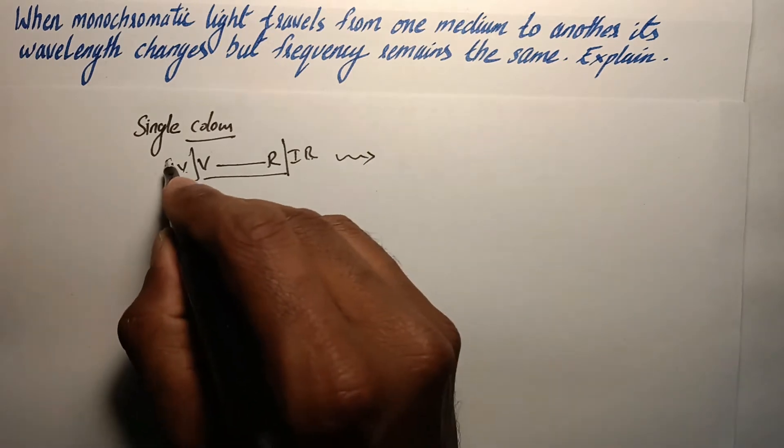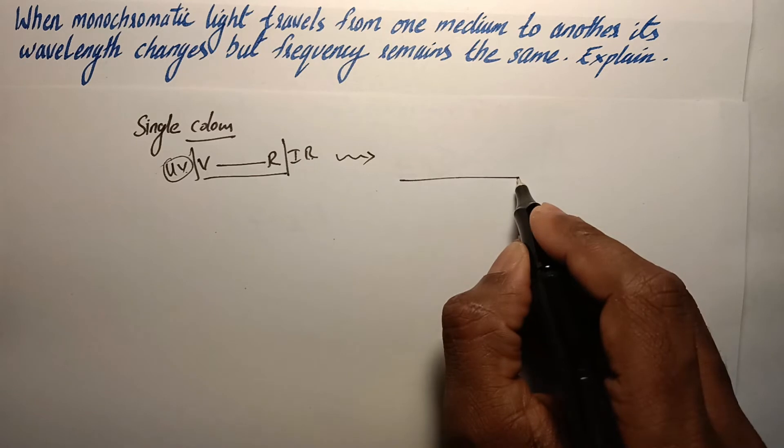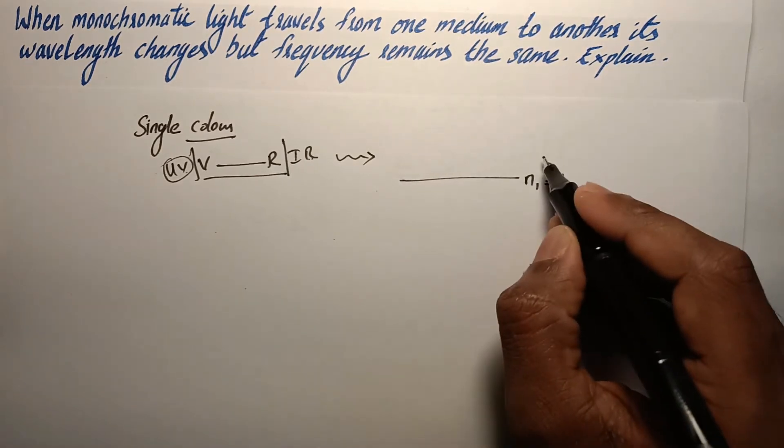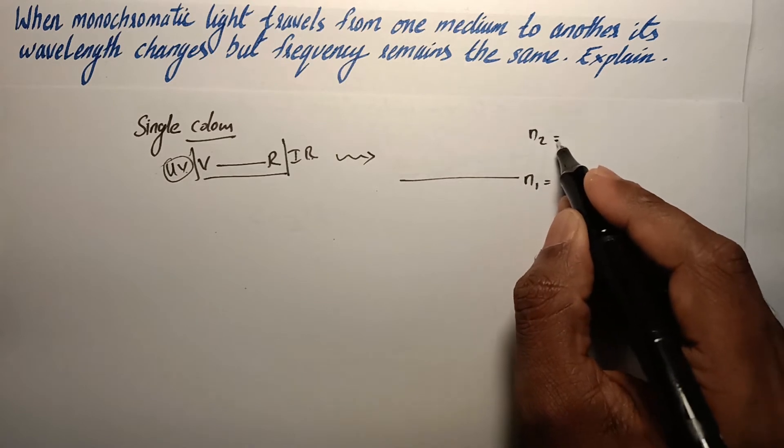For example, in case of ultraviolet, the electron transits from n₁ equal to 1 to any other higher orbit.